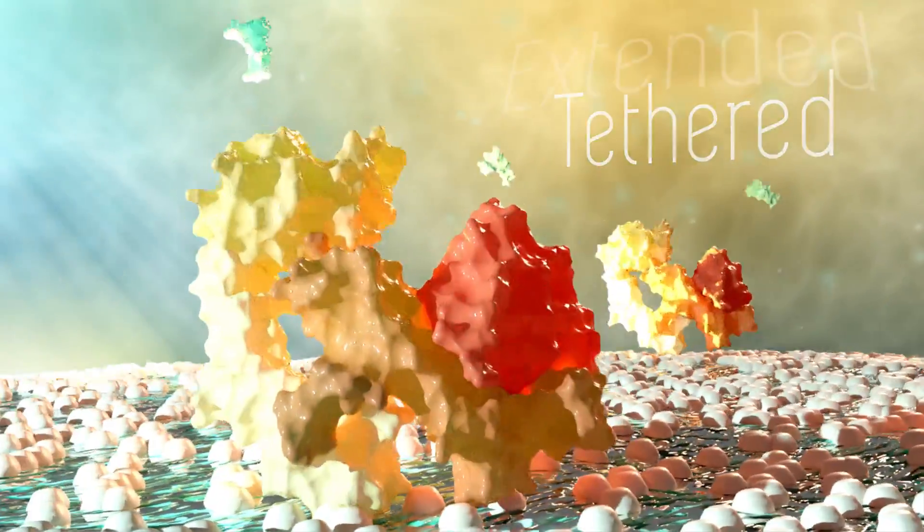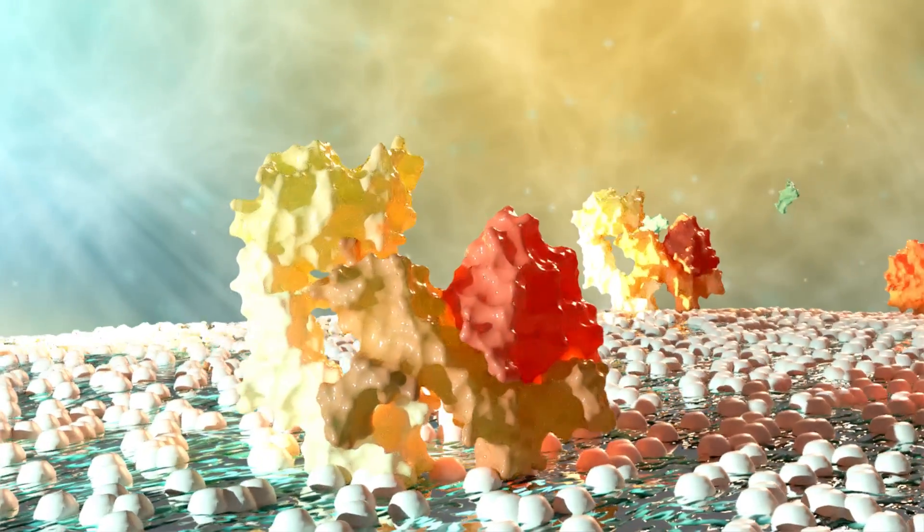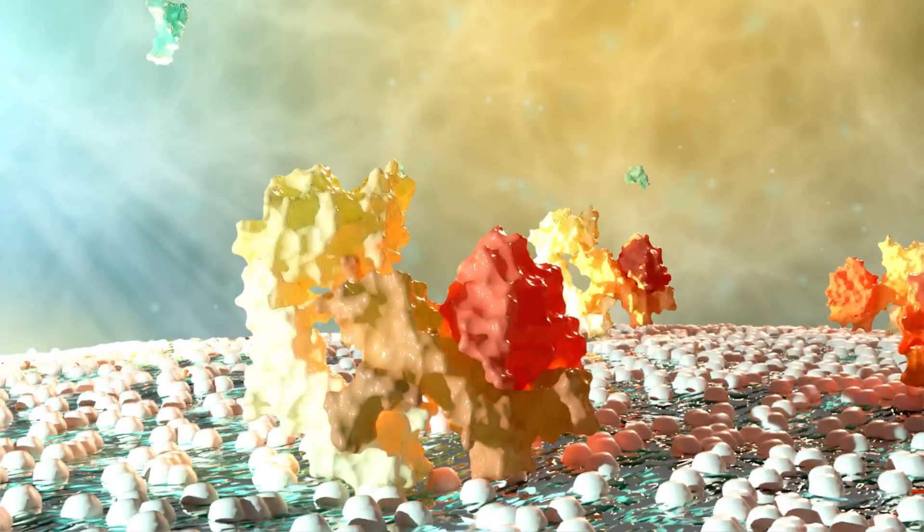Tethered or extended. In the tethered state, the four extracellular domains are curled in on each other, hiding a structure called the dimerization arm.